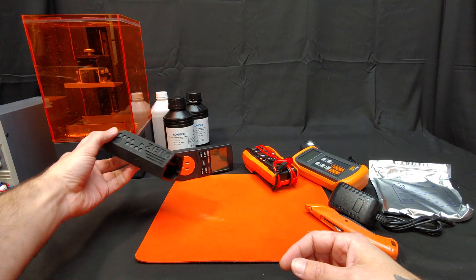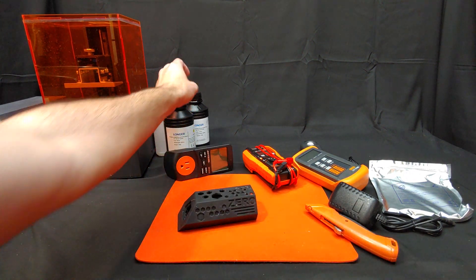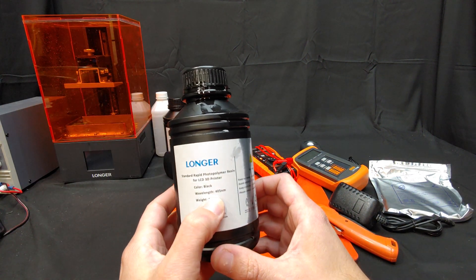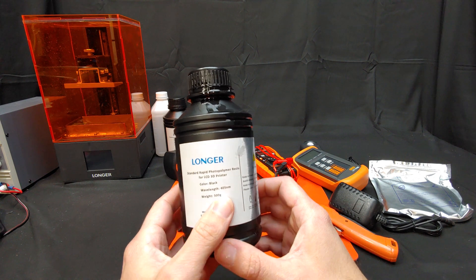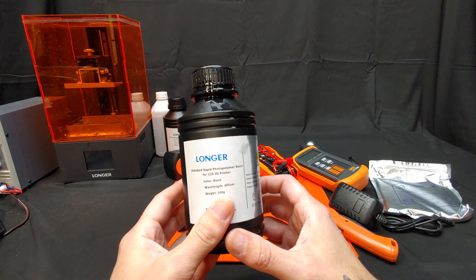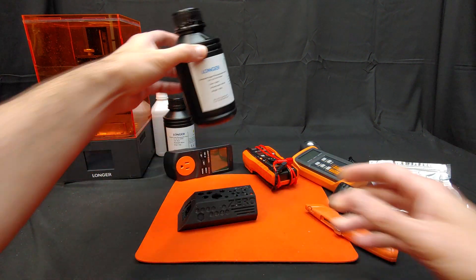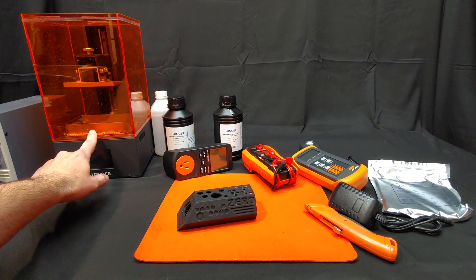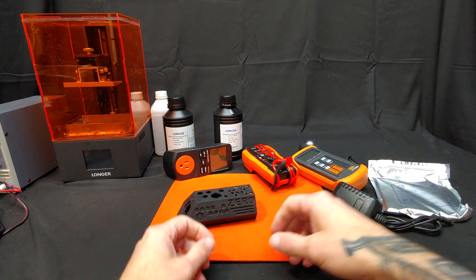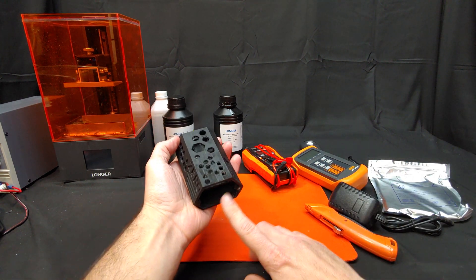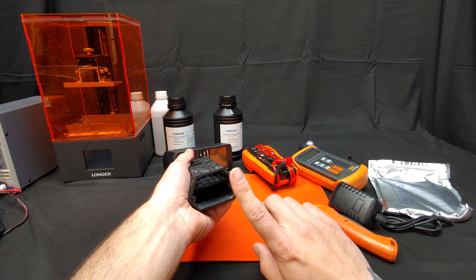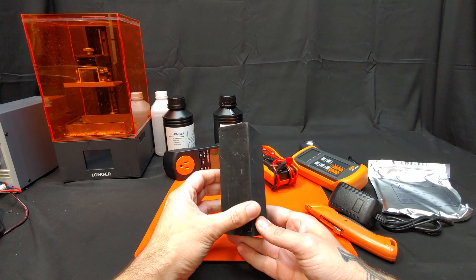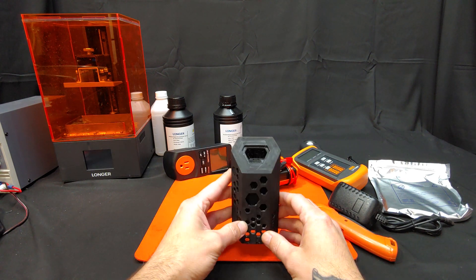This one uses a liquid resin that is cured with 405 nanometer wavelength UV light. And there's a little LCD screen underneath the silver tank in there that will only allow the UV light to hit whatever spot is needed for that level. It is a very fun product.